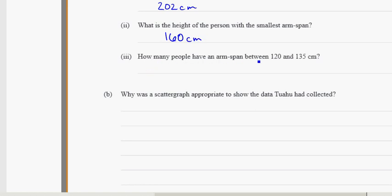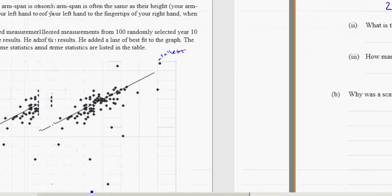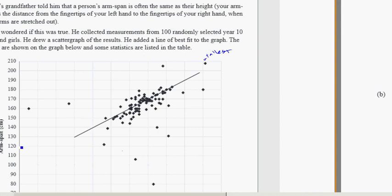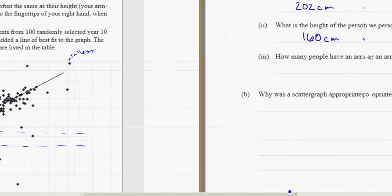How many people have an arm span between 120 and 155? We're going to look between this line at 120 and 135, between that line. We see that there are roughly two people with arm spans between 120 and 135 centimeters. Putting units in here is pretty important, so we've got centimeters and people.